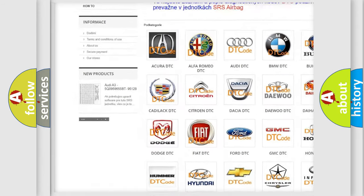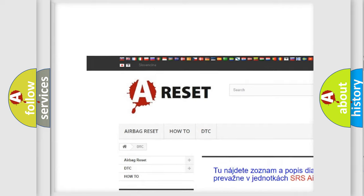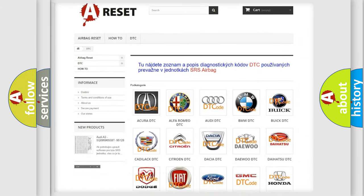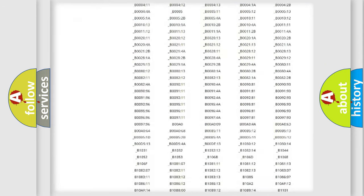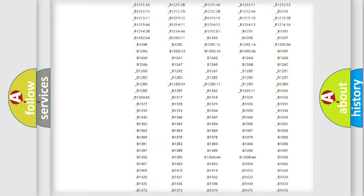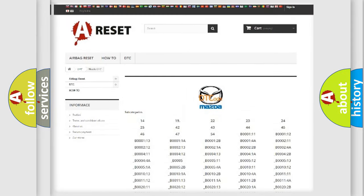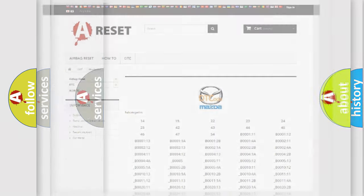Our website airbagreset.sk produces useful videos for you. You do not have to go through the OBD2 protocol anymore to know how to troubleshoot any car breakdown. You will find all the diagnostic codes that can be diagnosed in Mazda vehicles, and also many other useful things.